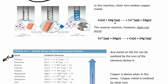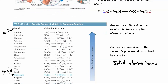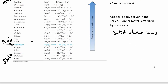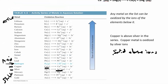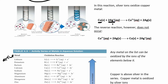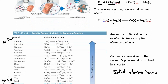Looking at an example using the net ionic equation: we have solid copper and silver ions. Comparing solid to ions in this table — if copper is above the silver ions, then the reaction will happen. You can see copper is here and silver ions are there, so because solid copper is above the silver ions in this table, the reaction will happen and the copper will replace the silver.